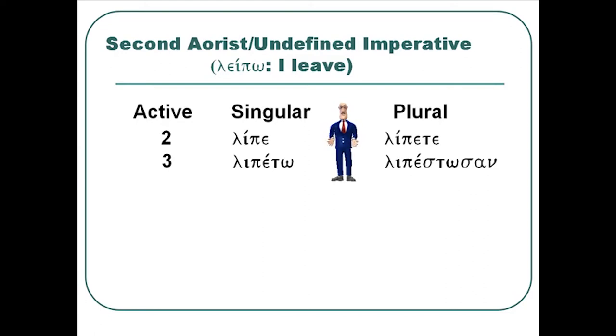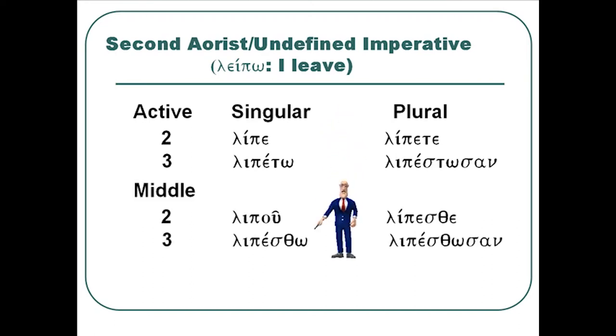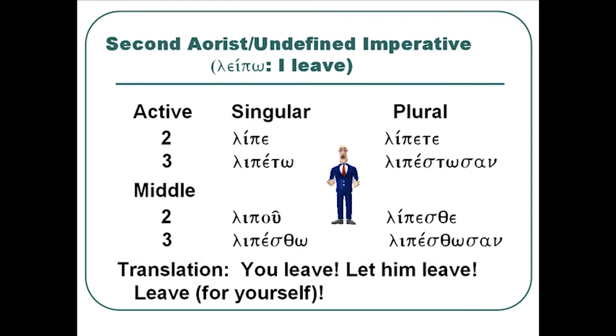The second aorist or undefined imperative works off the base form leipō, I leave. And as we saw before, the second aorist actually uses the present tense endings, the e-toto-tōsan, the u-tho-to-tōsan endings that we have with the present. So it's fairly easy. The leipō, the root form, goes to lip. So it's lipe, lipeto, lipete, lipetōsan. And the middle form is lipou, lipesthe, lipesthe, lipesthōsan. And it would be translated the same way as the other aorist. You leave, let him leave, leave for yourself in the middle or just flat leave. So the hardest thing with the second aorist is going to be remembering the base root form because there's always this root shift that you've got to be aware of in the second aorist.